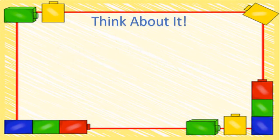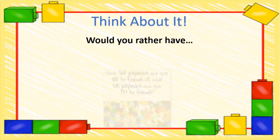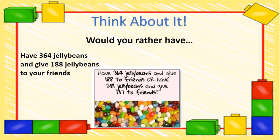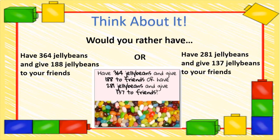All right, so now let's think about it. Here's a question for you. Would you rather have 364 jelly beans and give 188 jelly beans to your friends? Or would you rather have 281 jelly beans and give 137 jelly beans to your friends? Think about that one. Put your answer in the dialog box on your Schoology page of Think About It.